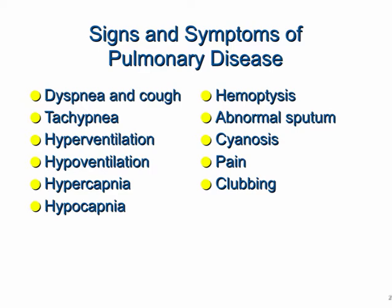When you're looking at signs and symptoms of pulmonary disease, obviously you've probably encountered a lot of these in the clinical setting. Things such as dyspnea — or sometimes shortness of breath — cough, tachypnea, which is a fast breathing pattern, hyperventilation, hypoventilation, hypercapnia, hypocapnia, hemoptysis which is basically coughing up blood, abnormal sputum, cyanosis, pain, and clubbing. Try to think about which ones coordinate with different disease states, as it's not uncommon to see a multitude of these across different conditions.